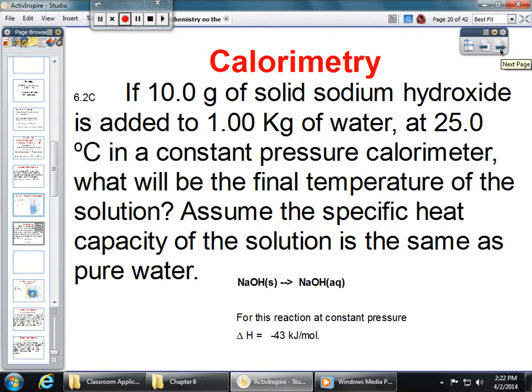So in this case, the problem we're looking at is taking 10 grams of solid sodium hydroxide. We're going to be dissolving it into one kilogram of water. We need the mass here because that's what goes into our calorimeter equation. It is initially at 25 degrees Celsius. It's in the coffee cup calorimeter, and we're looking to find the final temperature of this solution. And we're going to assume that the specific heat capacity of the final solution is simply the same as pure water.